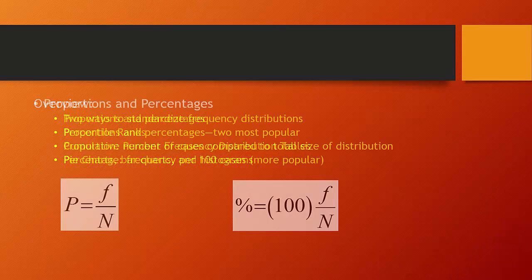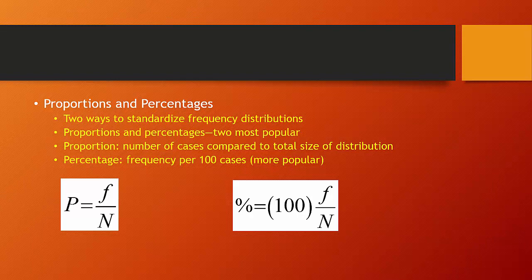Okay, so let's begin. To begin with, proportions and percentages are ways to standardize frequency distributions relative to the size of the distribution, rather than just reporting out the raw number of observations we have within any given category.